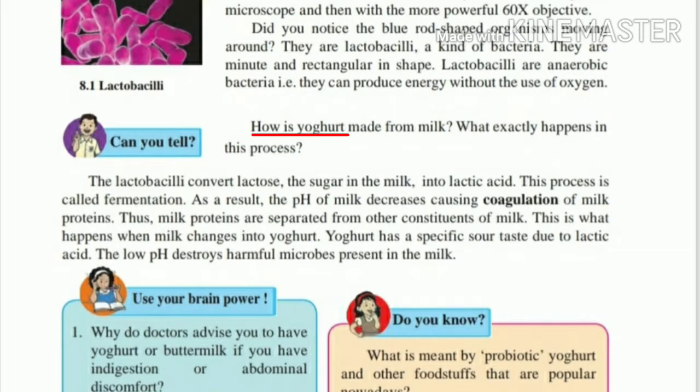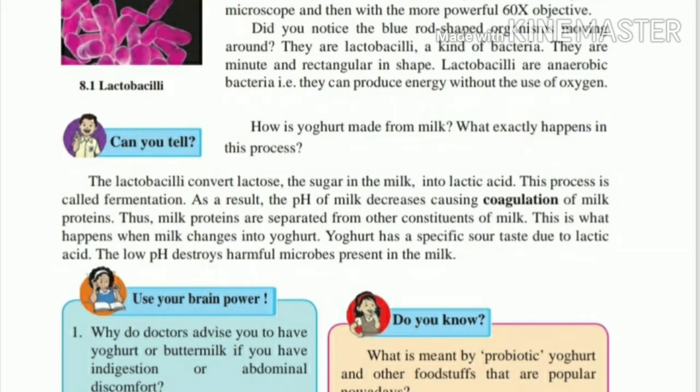How is yogurt made from milk? Everyone knows yogurt is made from milk, but what exactly happens? At night, we add a little bit of existing yogurt to milk, and by morning the whole milk is converted into yogurt — it's like magic.